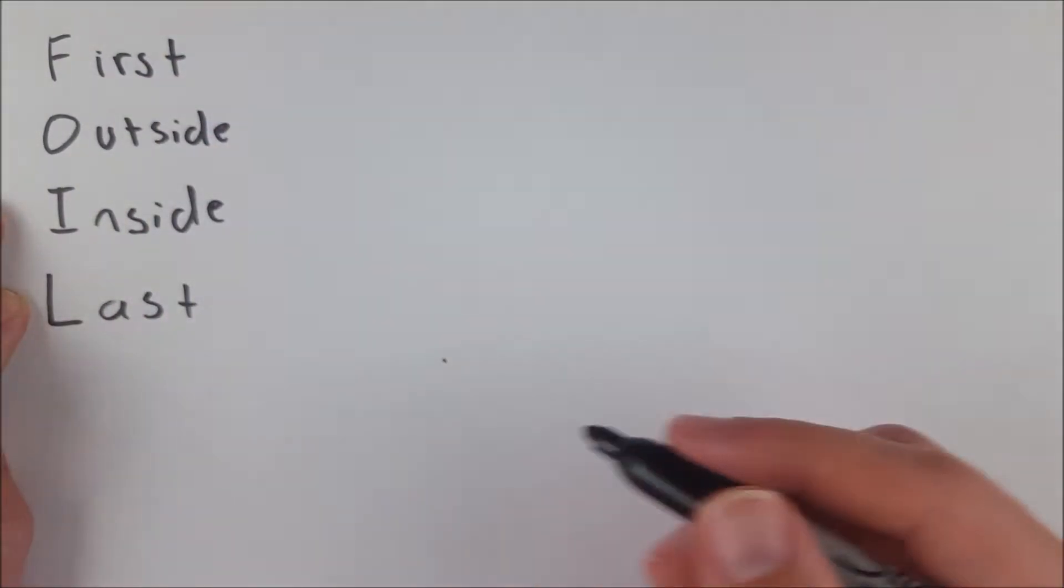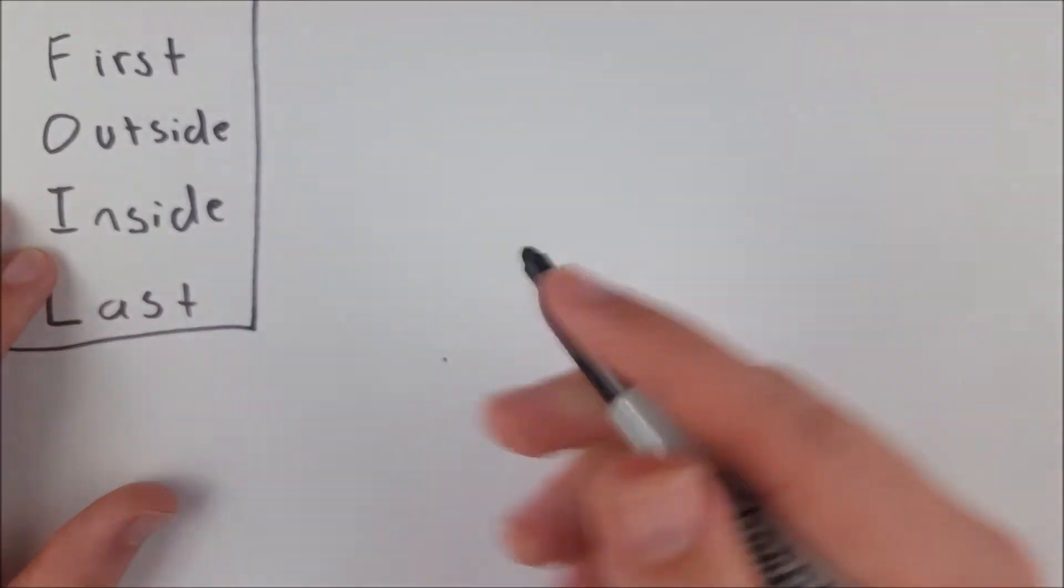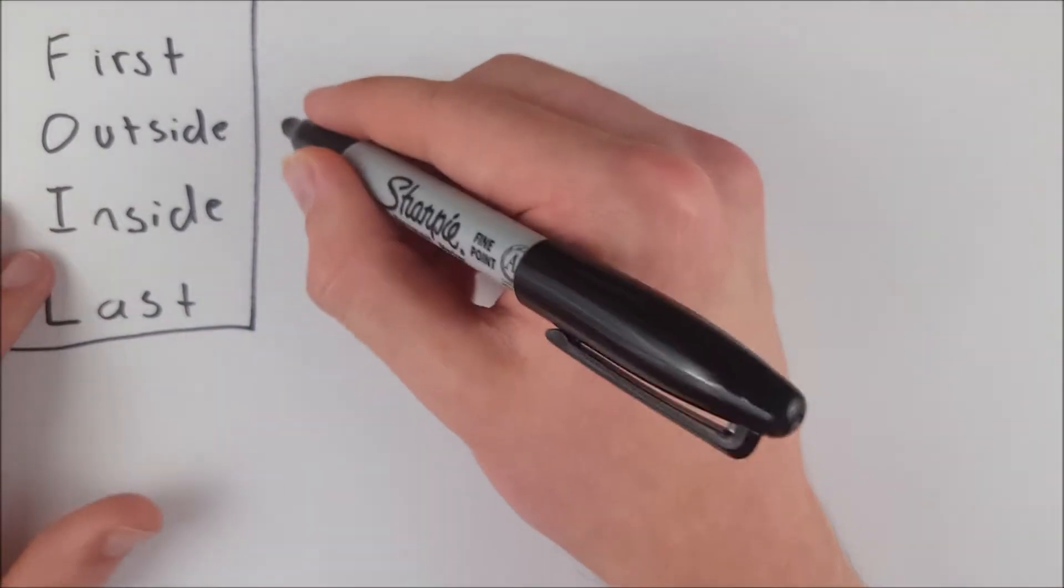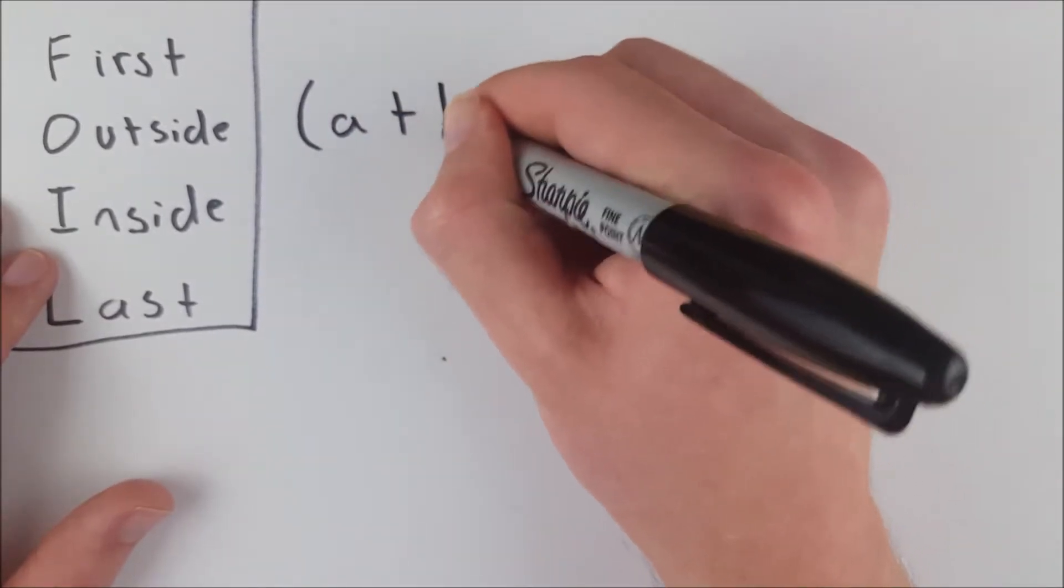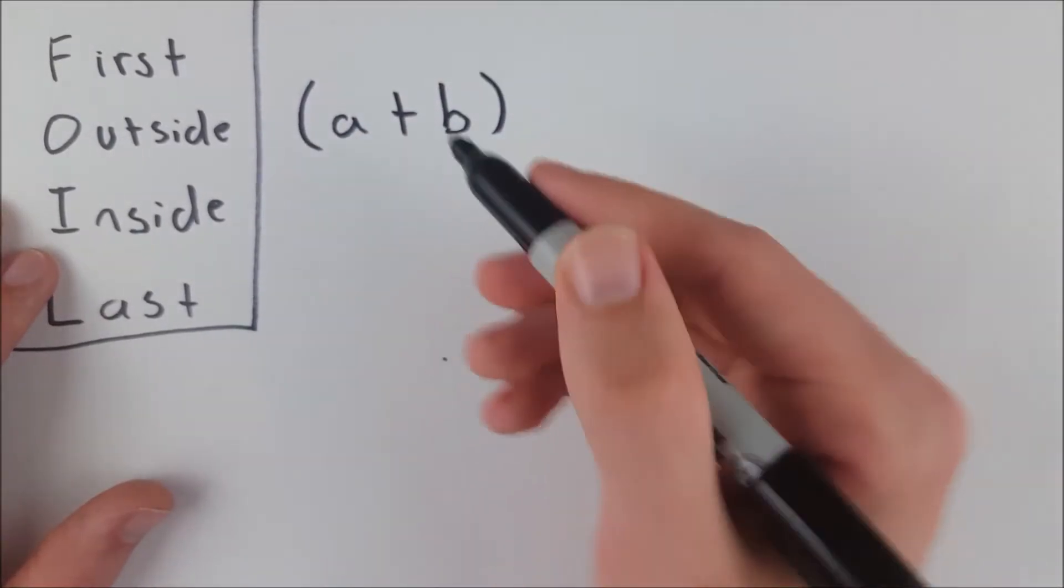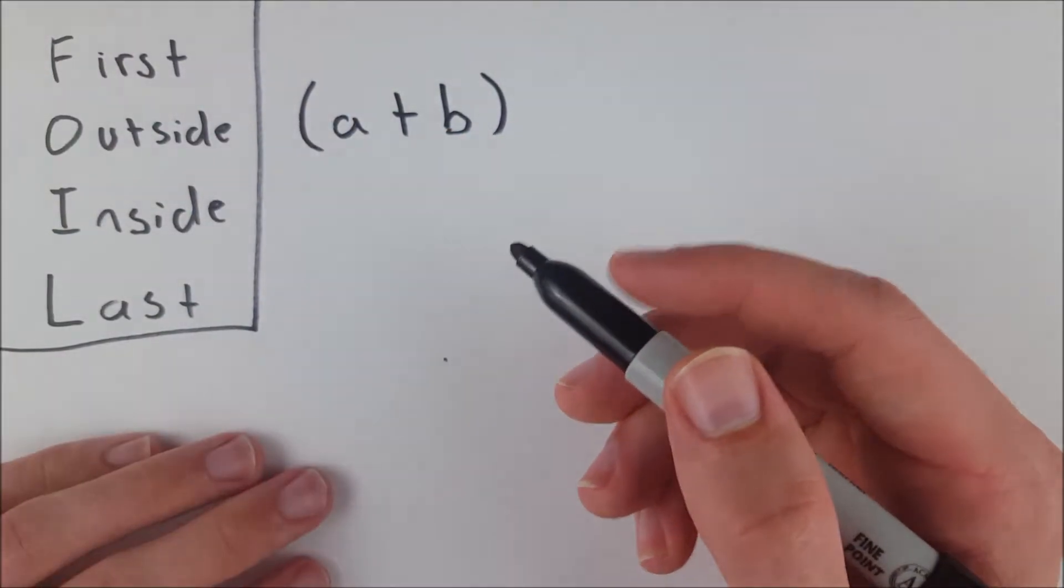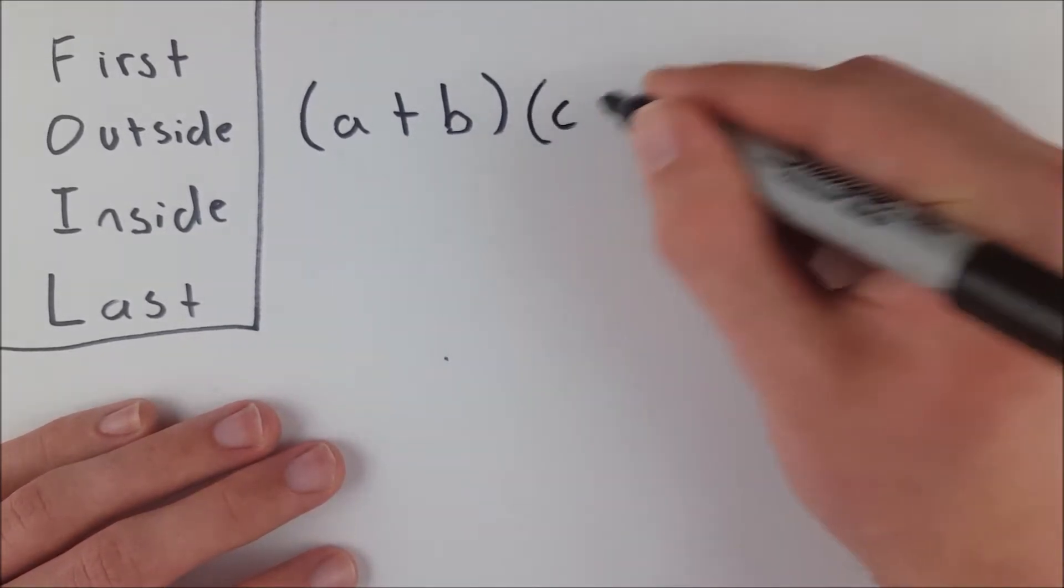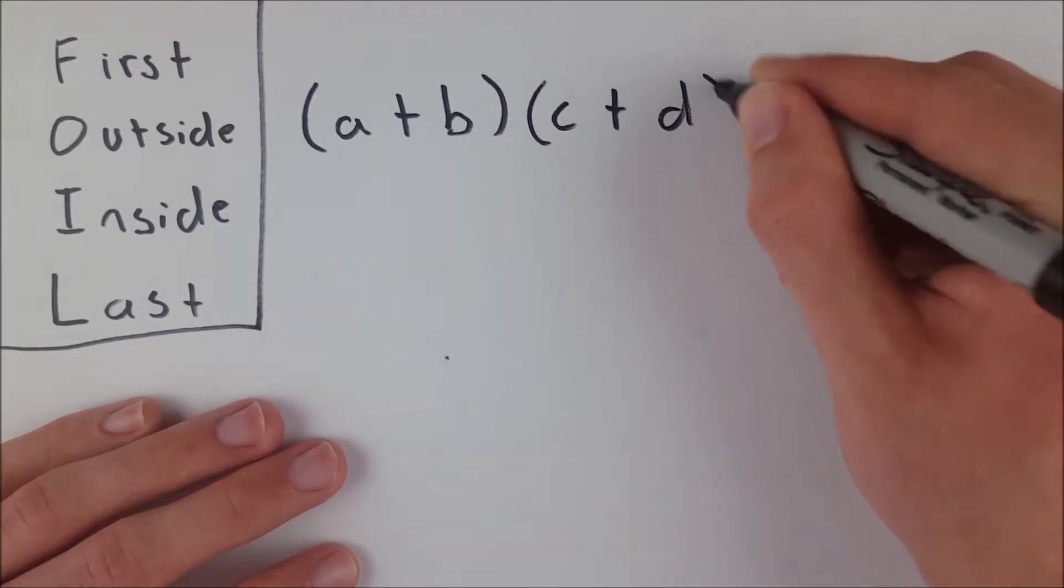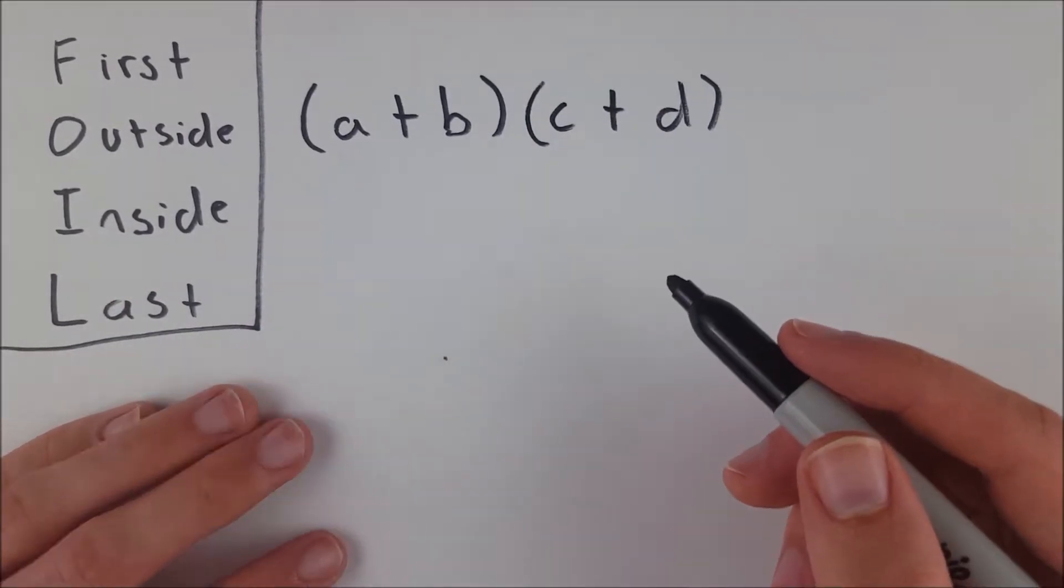To understand what these words mean, we need to look at an example where FOIL would come in handy. We need to be multiplying binomials, and a binomial is something like this: a plus b. This is a quantity that is defined by the sum of two other quantities. So if we have a plus b multiplied by c plus d, we can use FOIL to make sure that we don't miss a beat in multiplying these two binomials together.